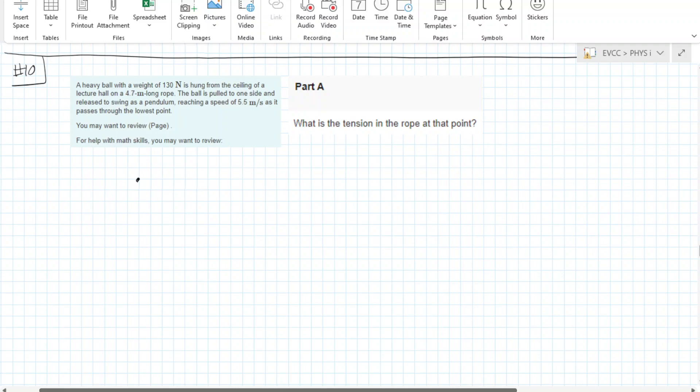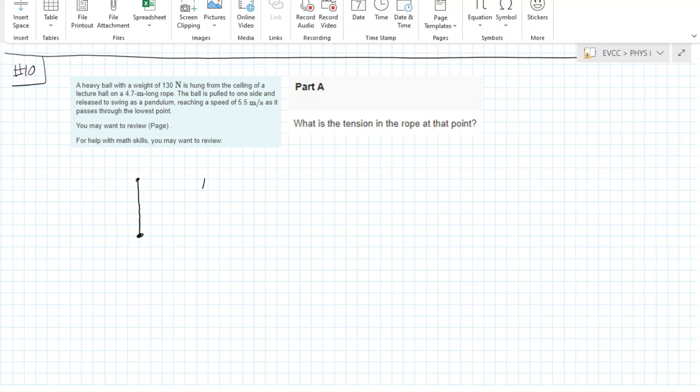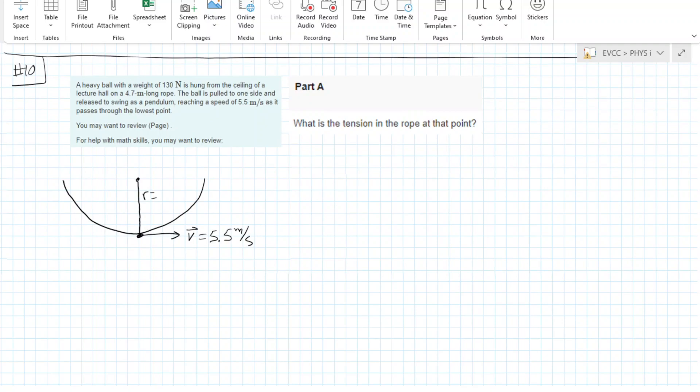At this point, we have the pendulum ball at the low point following this curved motion, moving with a velocity of 5.5 meters per second.